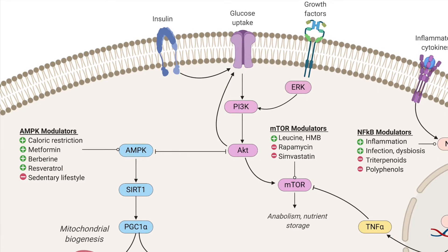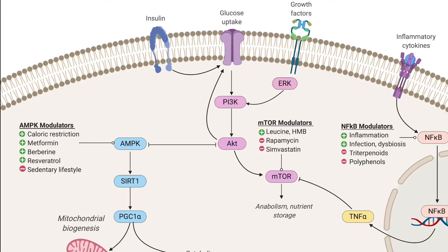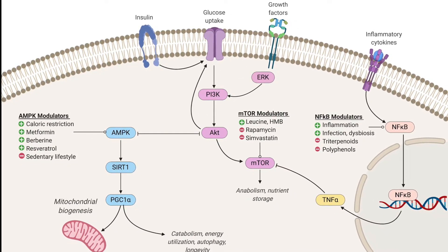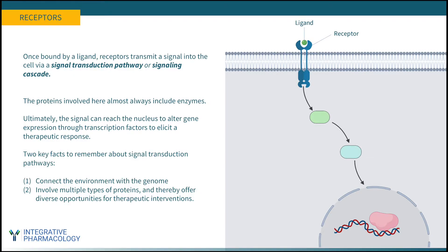In pharmacology, pathways involve multiple biological targets that participate in a coordinated biological action — it's never just something binding to a receptor; something happens after that. Two things to remember about signal transduction pathways: first, they connect the environment with the genome; and second, they involve multiple types of proteins and thereby offer diverse opportunities for therapeutic intervention. You might not just want to hit the receptor — hitting downstream proteins as well can give you a more stable, safer, and more effective therapy. Many pharmaceuticals act by binding just one target, whereas many natural products tend to hit more than one at a time. That's one of the biggest distinctions between the pharmacology of pharmaceuticals and natural products.